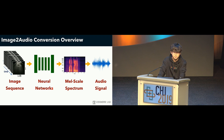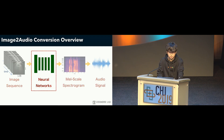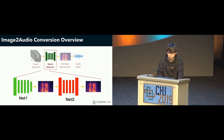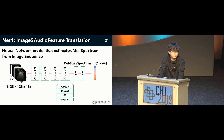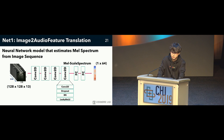This is our system that estimates audio using images. The neural network takes a time series of ultrasound images and outputs sound representation vectors — in our case, mel-scale spectrum. Finally, the output vectors are converted to actual sound waves by the Griffin-Lim method. This conversion process involves two neural networks, Net1 and Net2. The goal of Net1 is image-to-audio feature translation. It consists of four convolutional layers and two fully connected layers. Each convolutional layer was followed by dropout and batch normalization to prevent overfitting. Each layer was activated using leaky ReLU. Finally, it generates a 64-dimensional feature vector which corresponds to 20 milliseconds of audio.